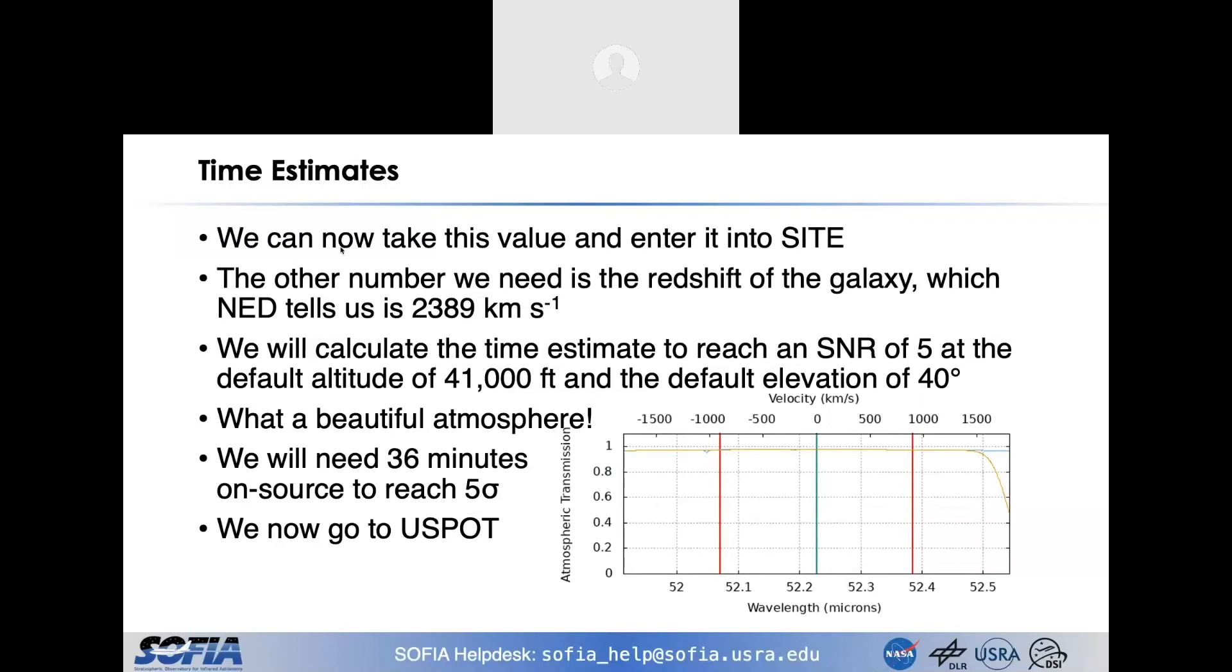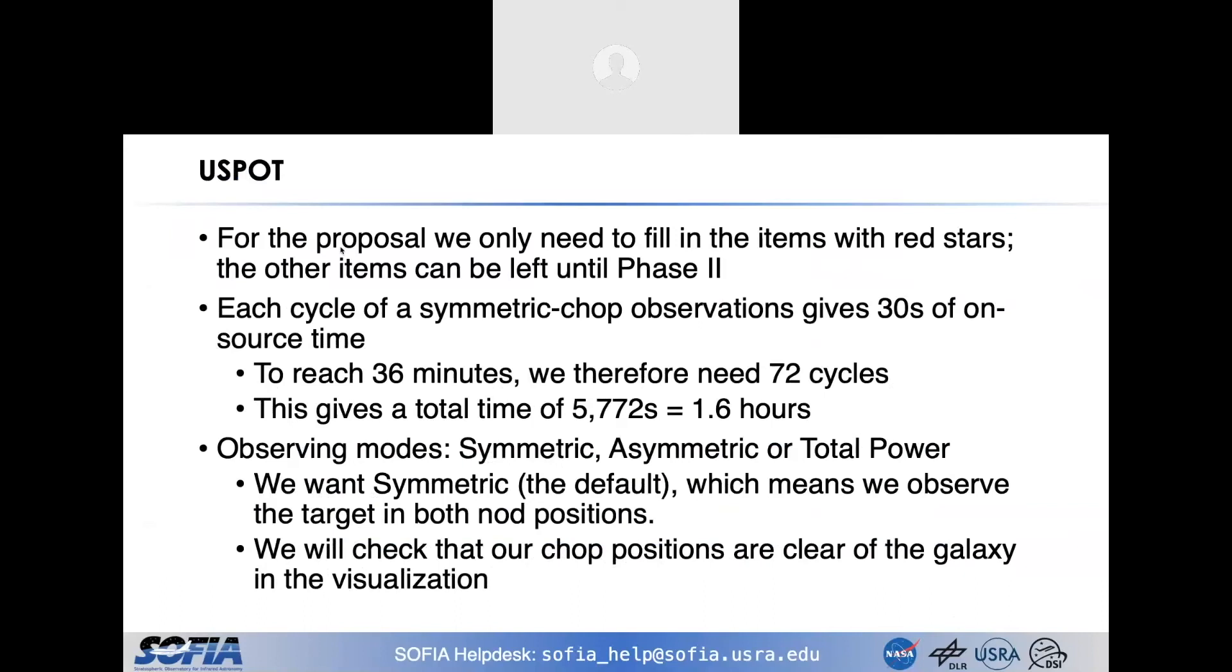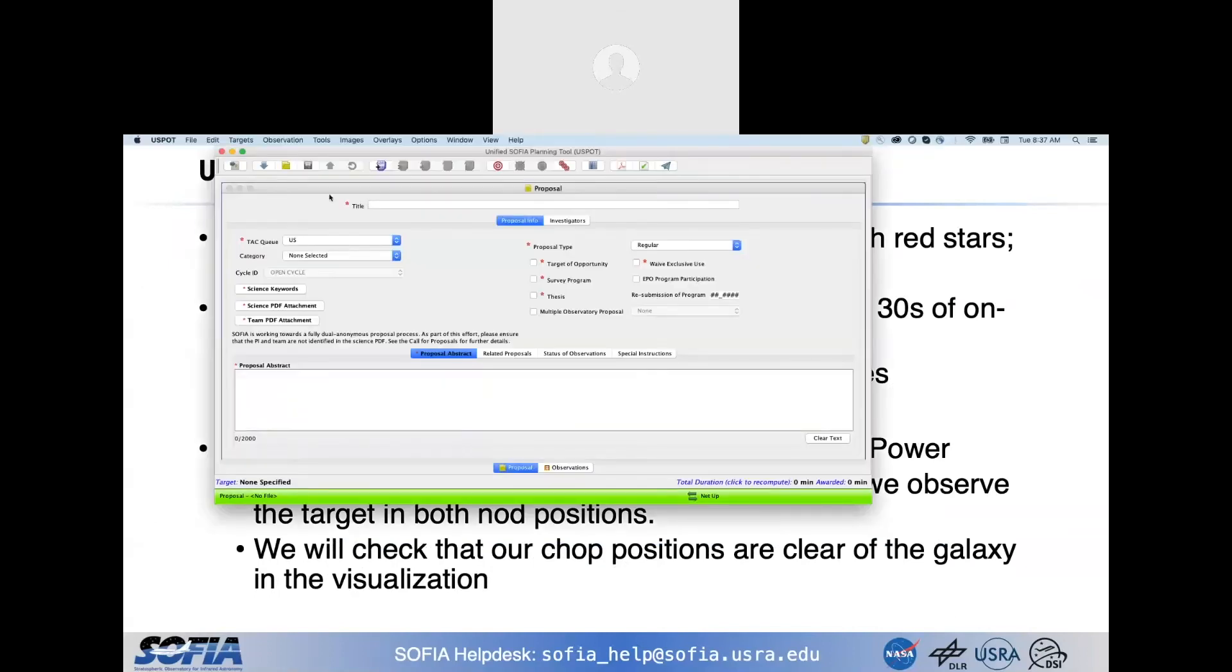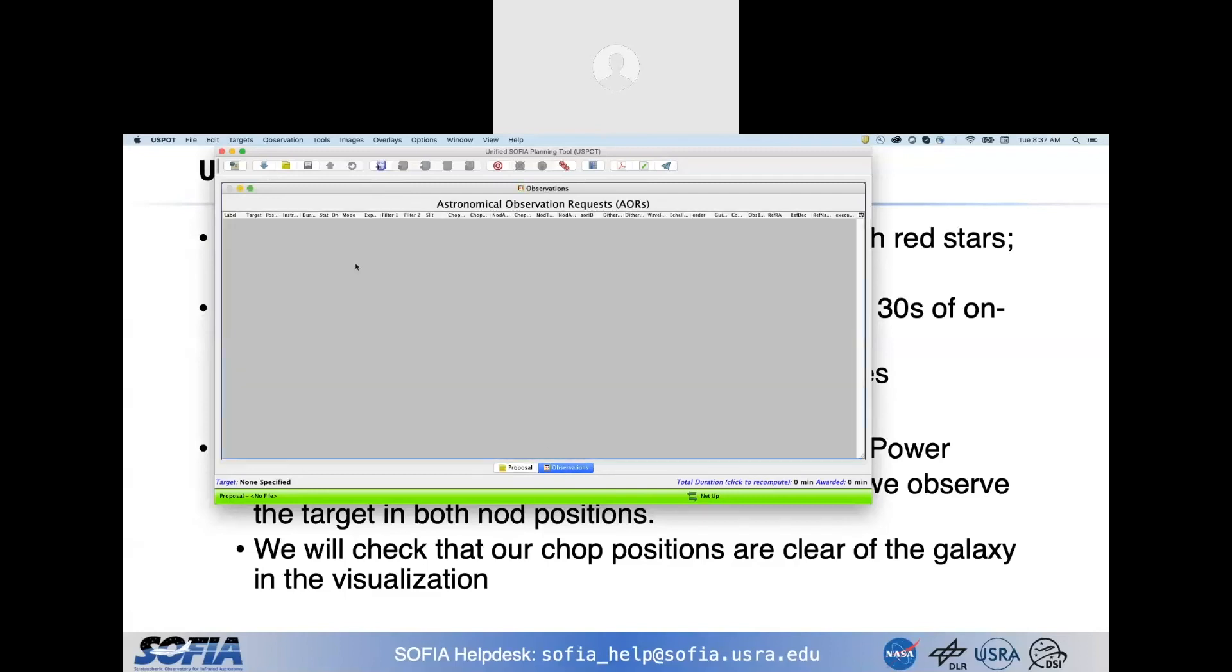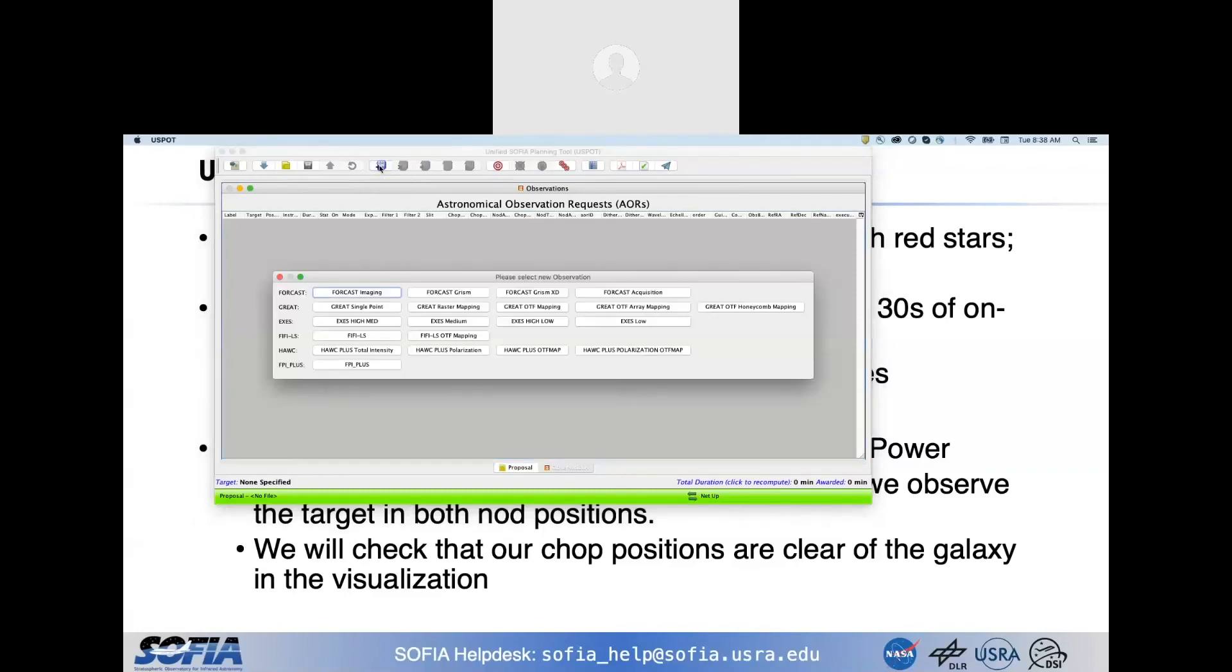So beautiful atmosphere, 36 minutes on source to reach 5 sigma. So we're going to go and we're going to put these values into U-spot. And we're going to need to fill out the items with red stars. Other items can be left for phase 2. So bring up U-spot. When you open U-spot, you start on the proposal window where you would enter your title, enter your team. But what we're going to look at today is we're going to go through to the observations tab. At the moment there's nothing here, so we need to start by adding an AOR to this.